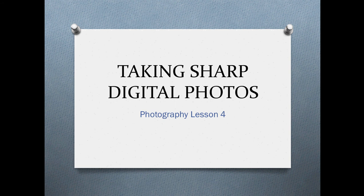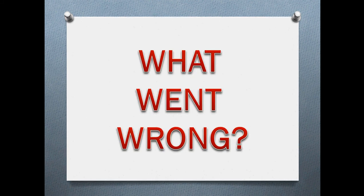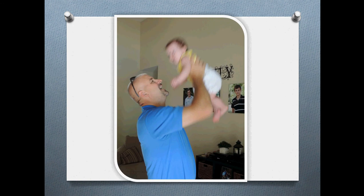Today is lesson four and we're going to talk about taking sharp digital photos. We are going to start by playing a game called 'What Went Wrong.' We're going to look at several photos and figure out what went wrong in each one.